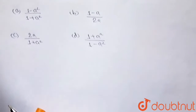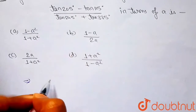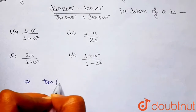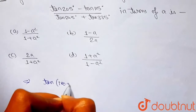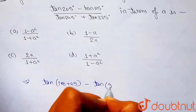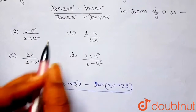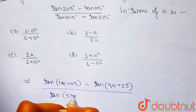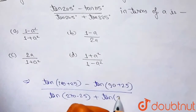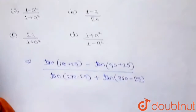Let's start. tan(205°) can be written as tan(180° + 25°). Similarly, tan(115°) can be written as tan(90° + 25°). This whole expression is divided by tan(245°), which can be written as tan(270° - 25°), plus tan(335°), which we write as tan(360° - 25°).